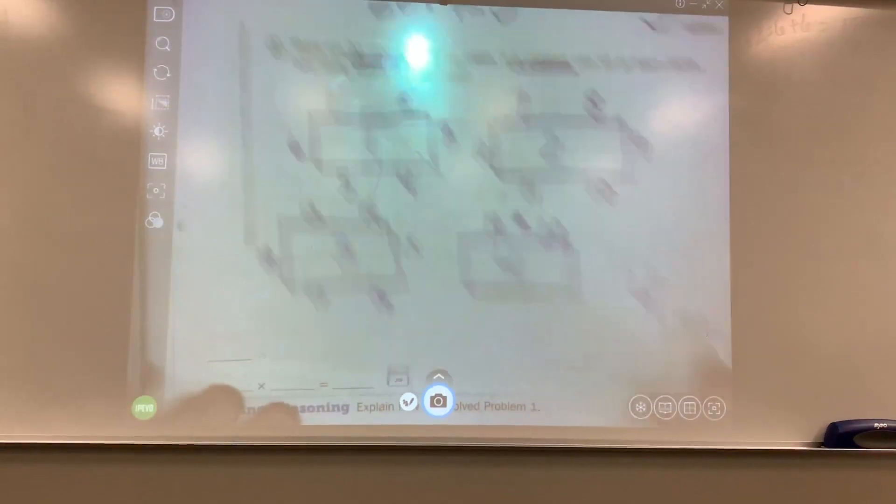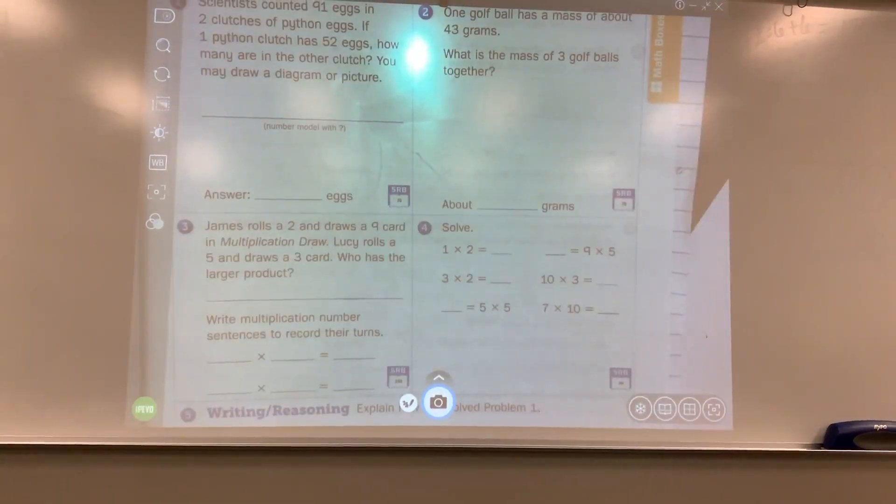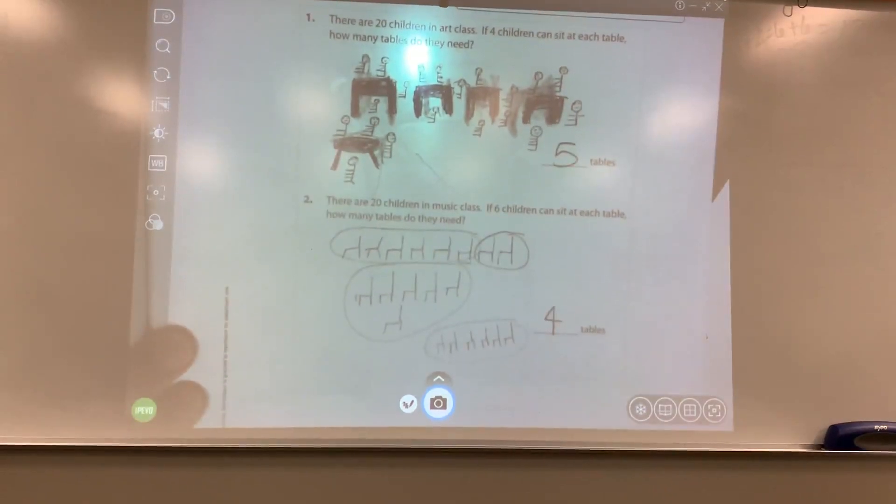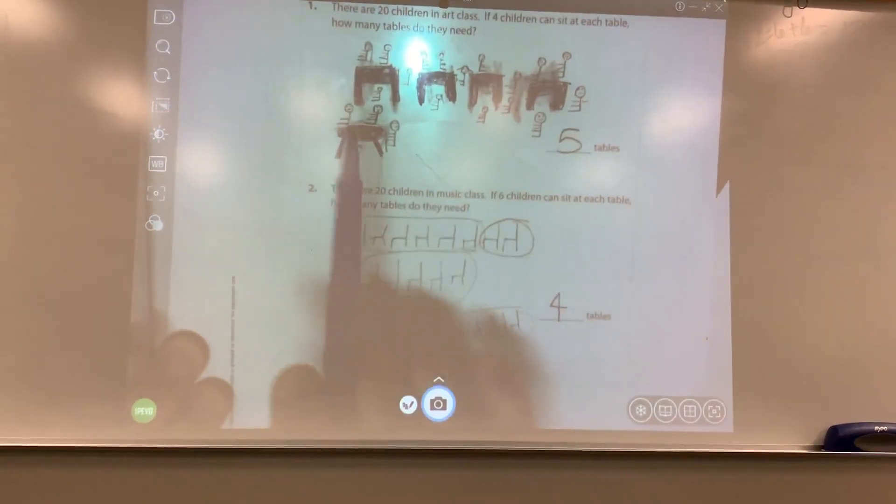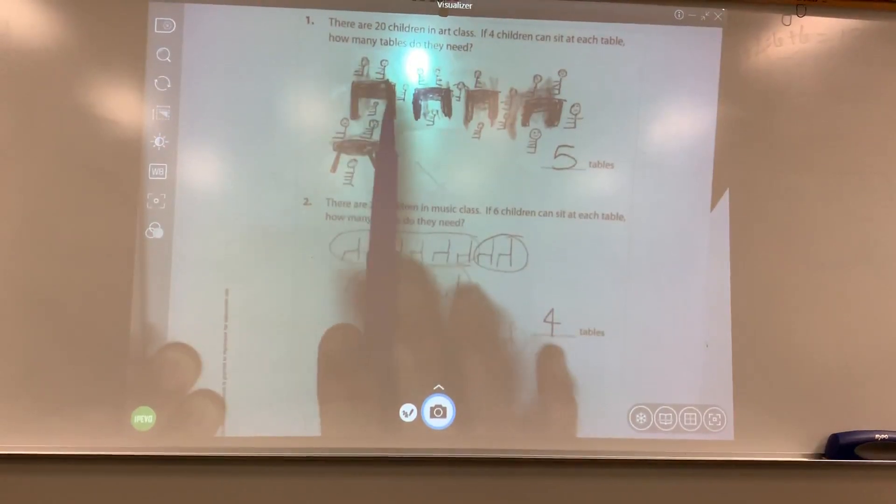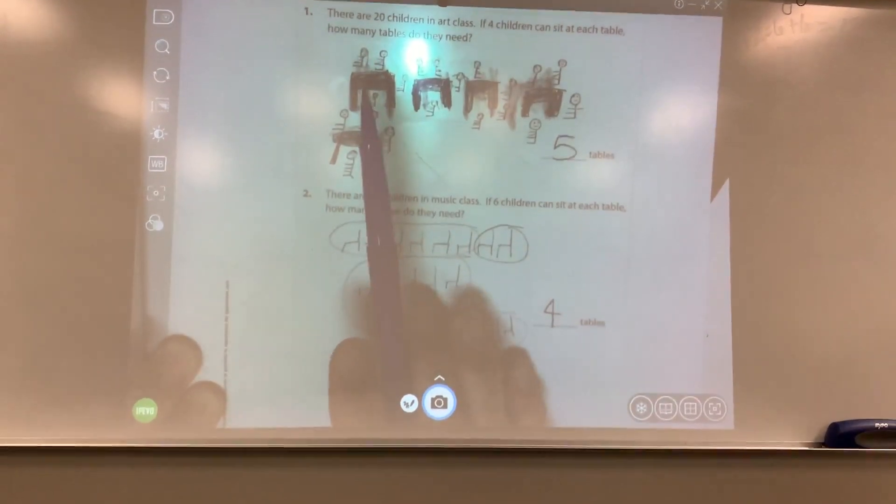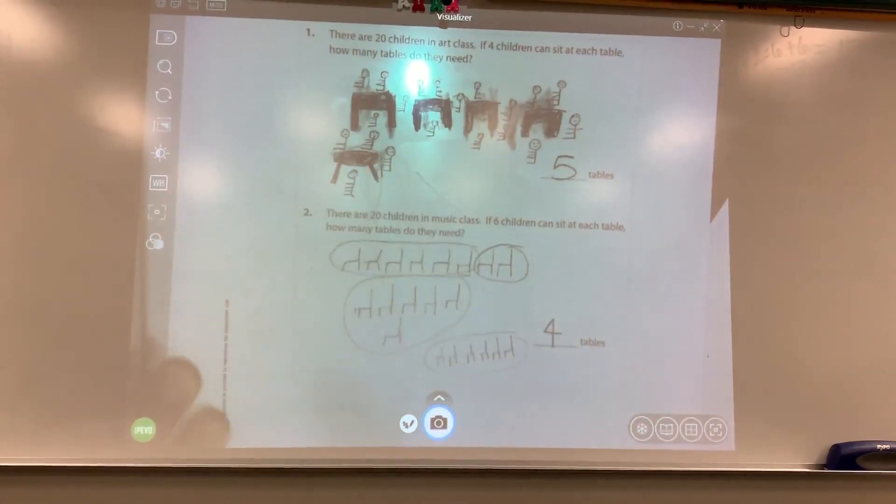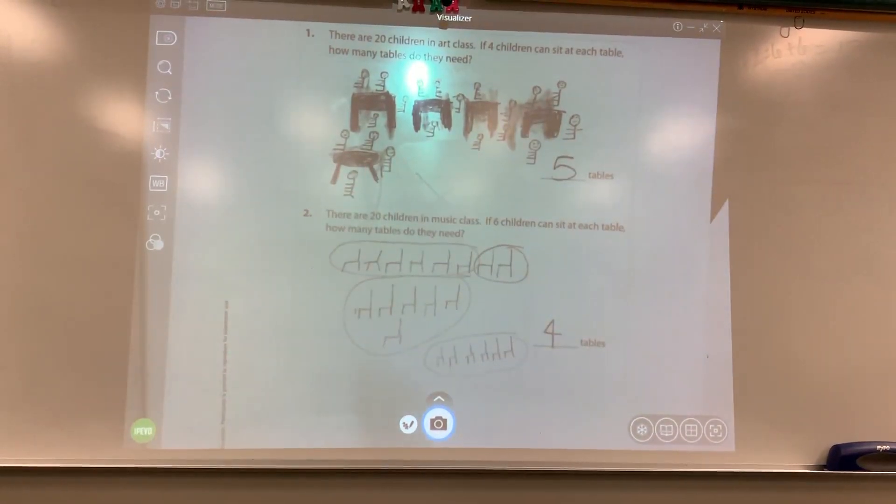I want to show you another way that you could work these problems. This child has four kids at each table. So it shows one, two, three, four, five tables, just like what I had found.